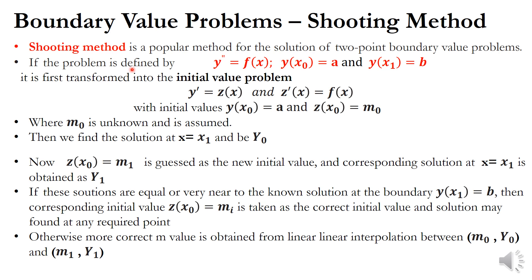If the problem is defined by y double prime equal to f of x — that is, the second derivative of y equal to f of x — and we are given the boundary conditions y of x-naught equal to a and y of x1 equal to b.